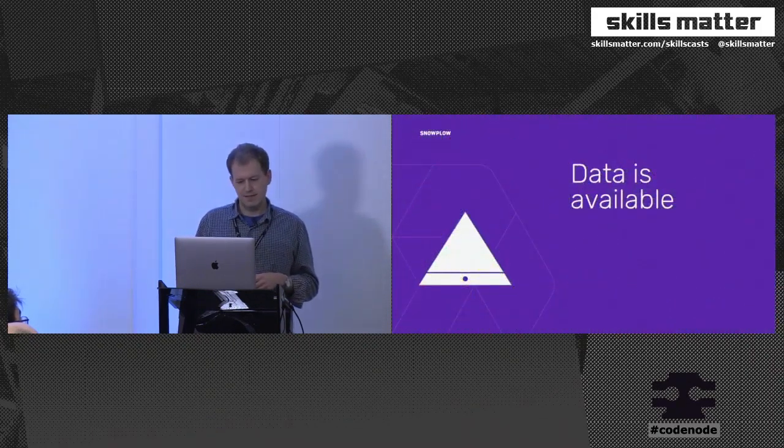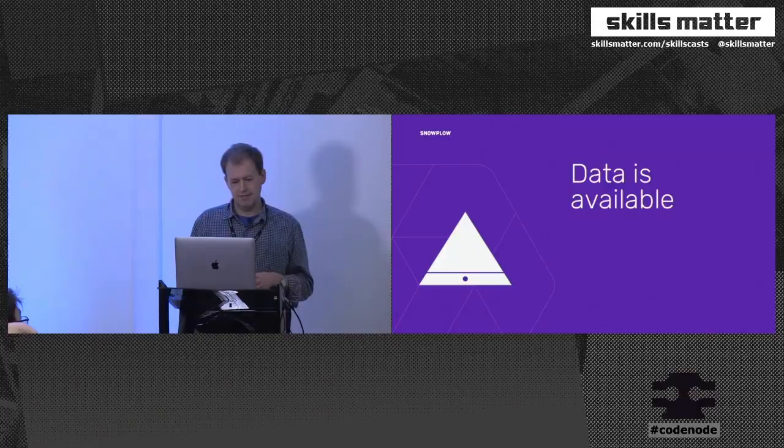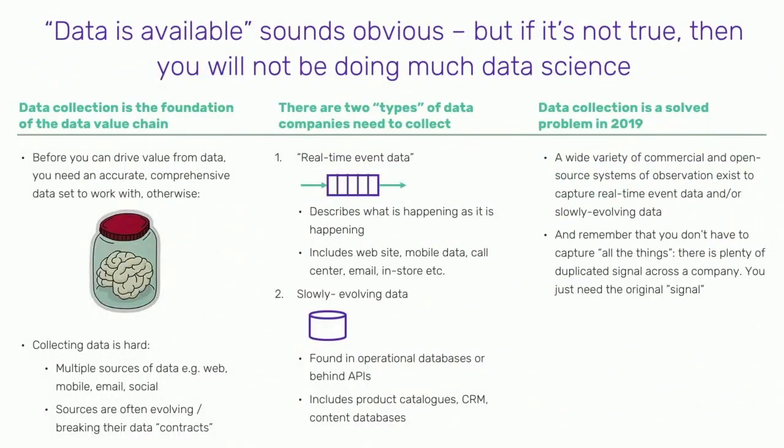Let's take the first tier: data is available. Data that's available sounds really obvious, but if it's not true, you're not going to be doing much data science. Data collection is the foundation of the data value chain. If you don't have that data, fundamentally you're a brain in a jar - you don't have the nervous system providing all those signals.